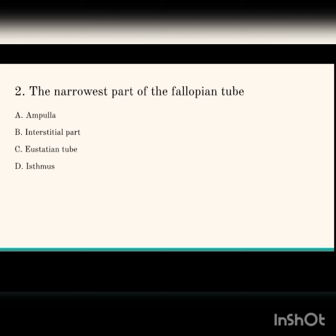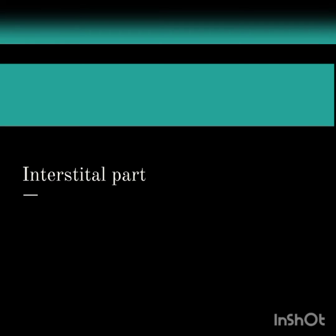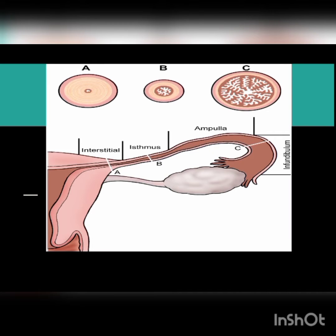Next question: the narrowest part of the fallopian tube. The options are ampulla, interstitial part, eustachian tube, and isthmus. The answer is the interstitial part — the smallest or thinnest area. In the ampulla, fertilization takes place.